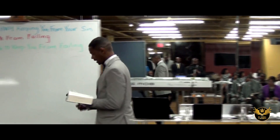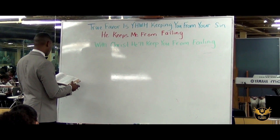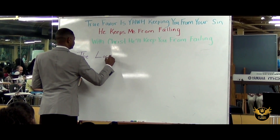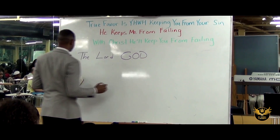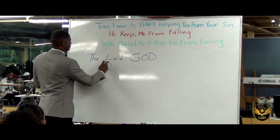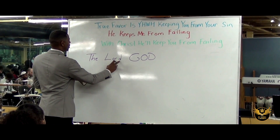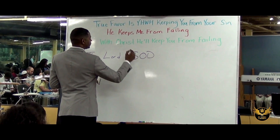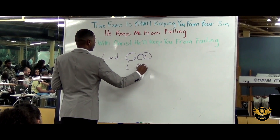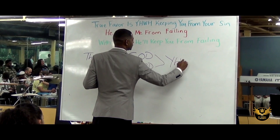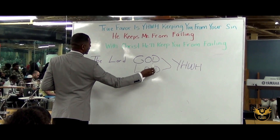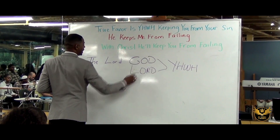Now in the King James Version Bible, in Isaiah 50 verse 4, it reads 'the Lord God.' For students of the Word, you'll recognize that 'Lord' is capital L, small O, small R, small D — but 'God' is all capitalized. Whenever you see 'GOD' all caps, or 'LORD' all caps, both of these are substitutions for Yahweh. In the King James Version Bible, there is consistency: whenever you see capital LORD or capital GOD, both are substitutions for His name.